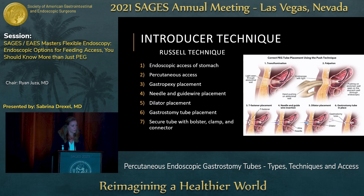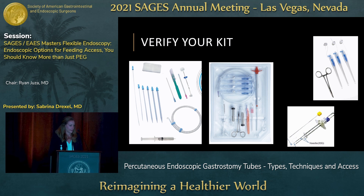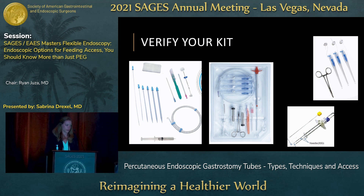When using the introducer technique, your final dilator and peel-away sheath need to be about four French larger than the tube size. So if you want to use a 20 French tube, you need to place a 24 French dilator and peel-away sheath. The kit can vary — you may have sequential dilators that you pull on and off your wire, or an all-in-one dilator and peel-away sheath that has multiple dilators within one so you don't have to take it on and off the wire. You'll also need to decide whether to do gastropexy with T-fasteners or some type of suturing device.